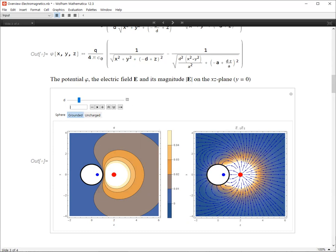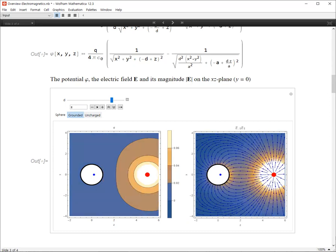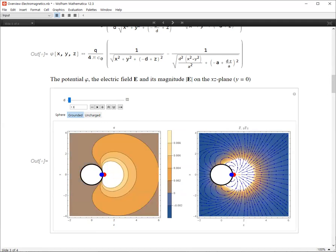Well, if you put it farther away from the sphere, then this is the shape of the potential and the electric field. Well, if you put it very close to the sphere, then it looks like this. We have a point charge here and the image charge is very close to the point charge. And this is the distribution of the electric field.